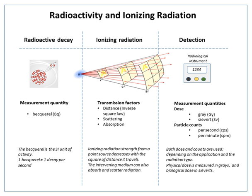That is 4.4 kilobecquerels of activity. The global inventory of carbon-14 is estimated to be 8.5 × 10¹⁸ Becquerel. The nuclear explosion in Hiroshima, an explosion of 16 kilotons or 67 terajoules, is estimated to have produced 8 × 10²⁴ Becquerels.